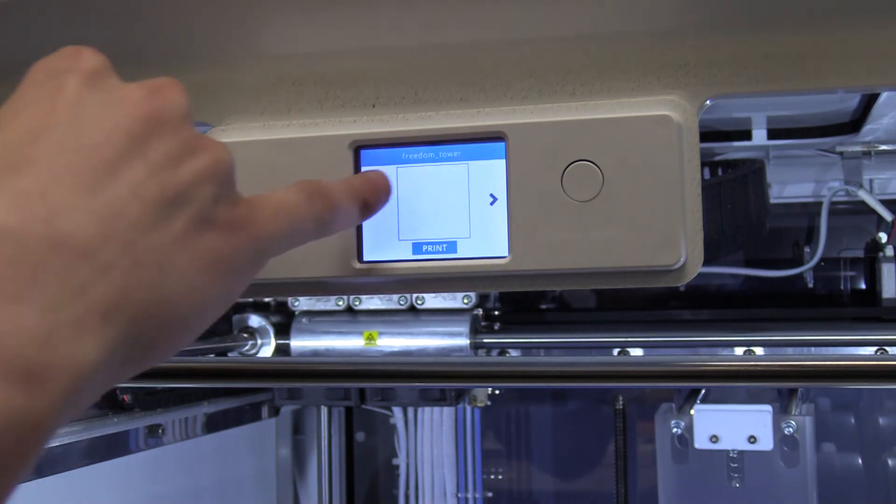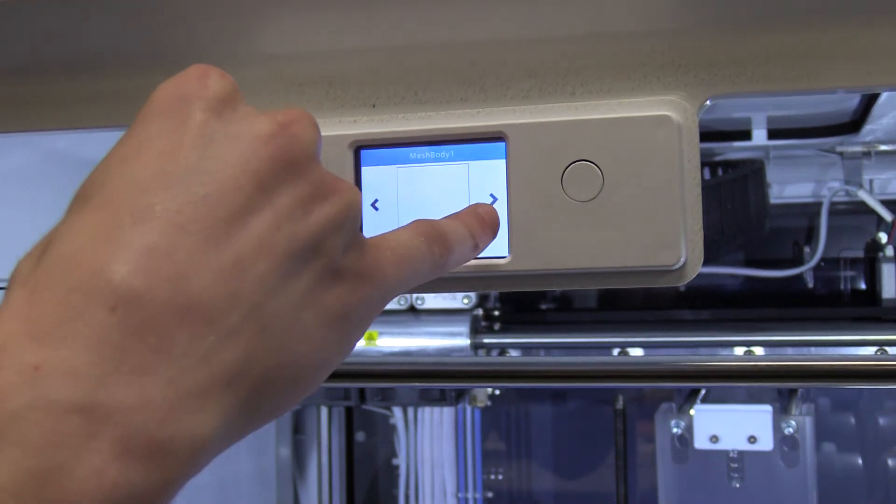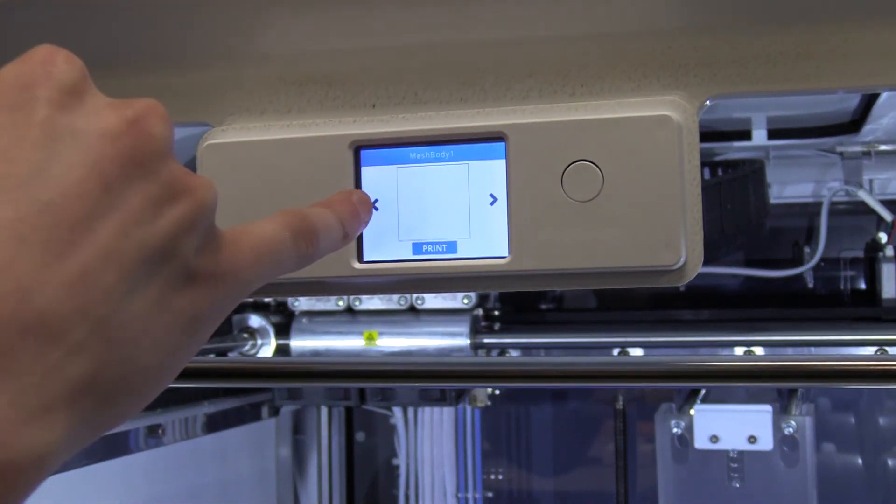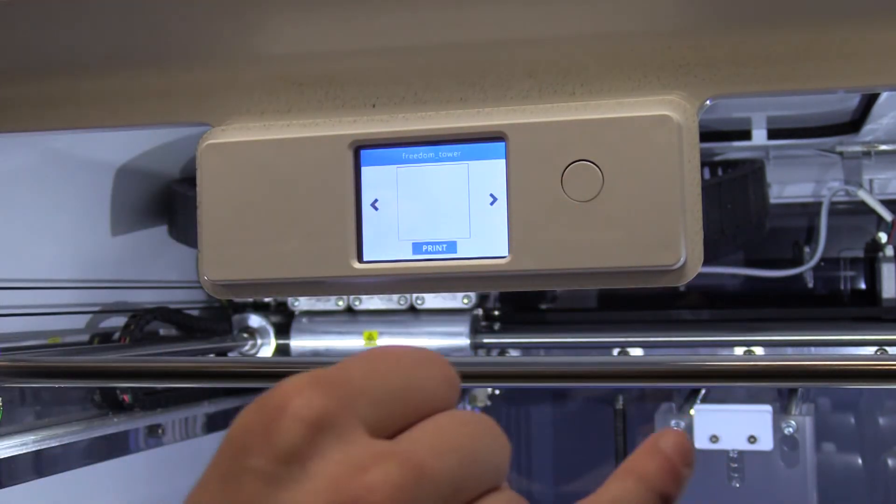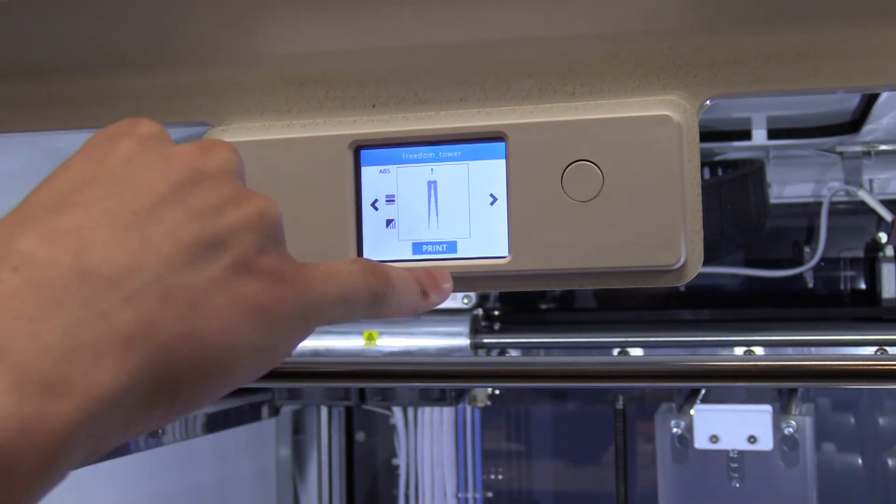Up top in this section, you will be able to choose between which STL file you want to print depending on how many you have saved on the USB drive. In our case, we will be printing the Freedom Tower building and you begin by, for the second time, hitting print.